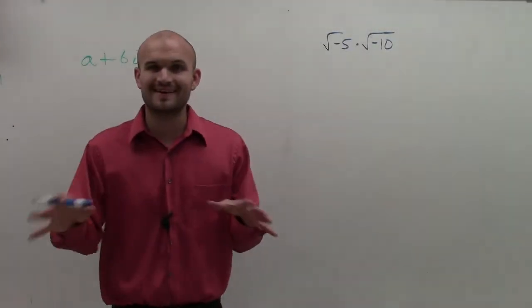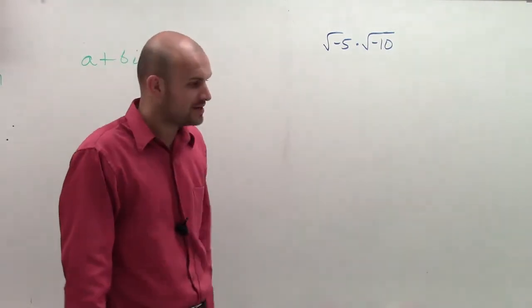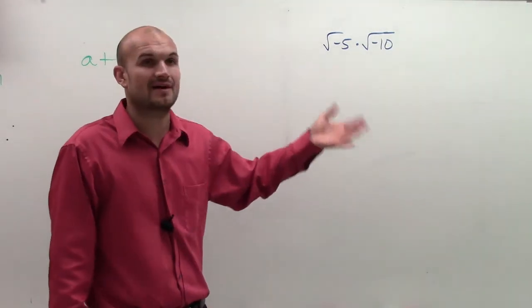OK. So for the video on this one, what I'm going to do is multiply two numbers. And we notice that I'm taking the square root of negative 5 and the square root of 10.